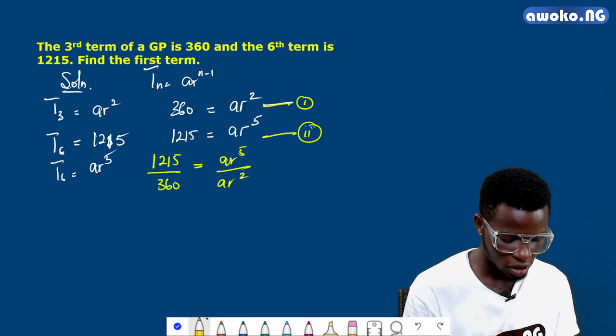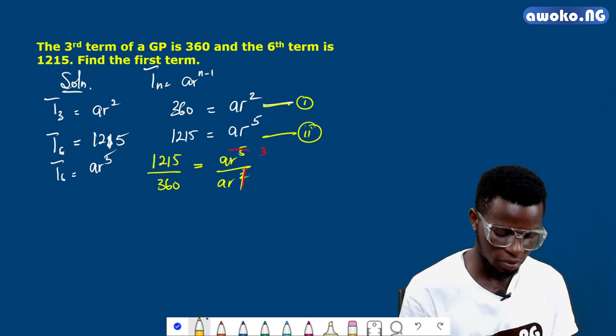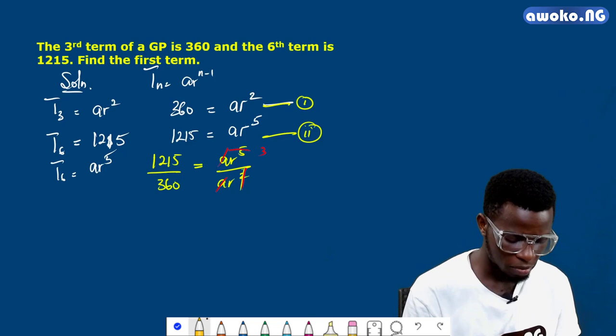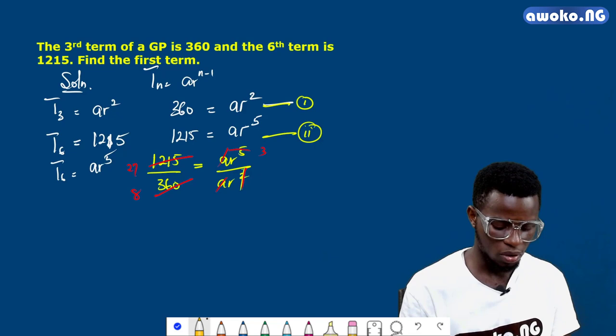If you divide this, one of these will cancel, leaving us with r³. A will cancel a, and then if you divide by reduction, we have that this will give us 27 over 8.